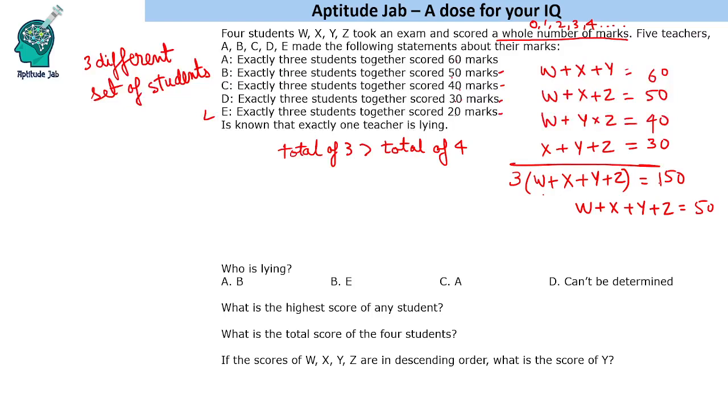The total turns out to be 180, and the grand total of these four is 60 marks. This means E is lying. Now we will find out the scores. We know the grand total is 60.